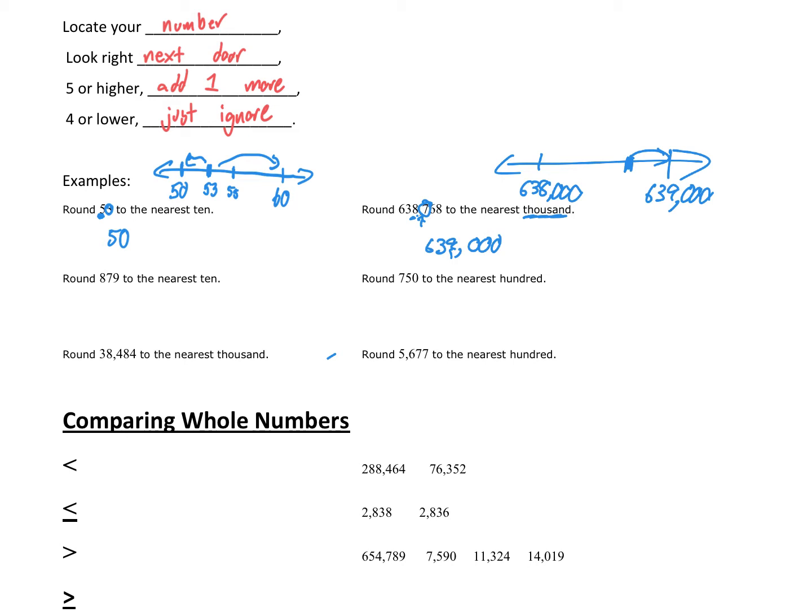Round 879 to the nearest ten. So I'm looking at my tens digit, the seven. Then I look right next door to the nine. So closer to 870 or 880? Well, it's clearly closer to 880. That's my answer.